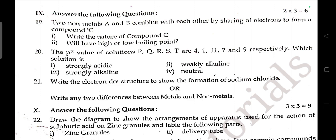Three-mark question: Two non-metals A and B combine with each other by sharing of electrons to form compound C. Write the nature of compound C — will it have a high or low boiling point? The pH values of solutions P, Q, R, S, T are 4, 1, 1, 7, 9 respectively — which solution is strongly acidic, weakly alkaline, strongly alkaline, and neutral?